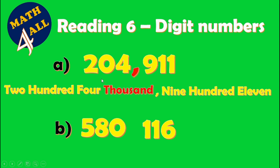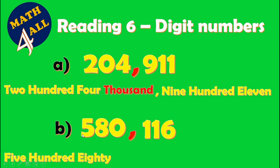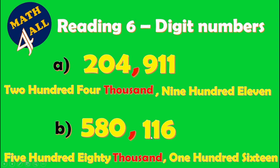Example B: here we have a six-digit number. Count from the right side three digits, then put a comma. This comma is called 'thousand.' Read from the left side: five hundred eighty thousand one hundred sixteen.